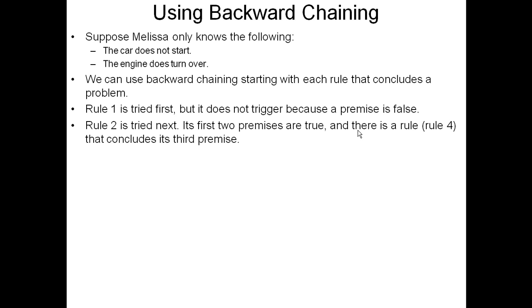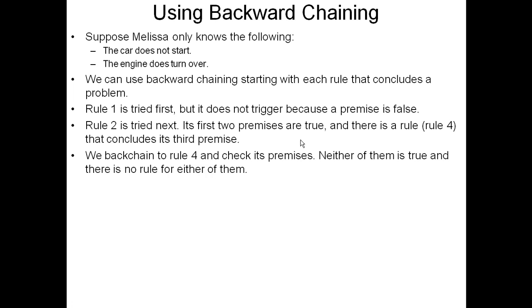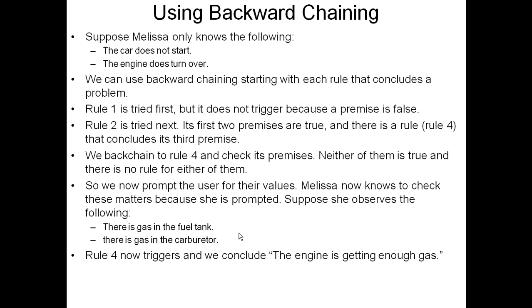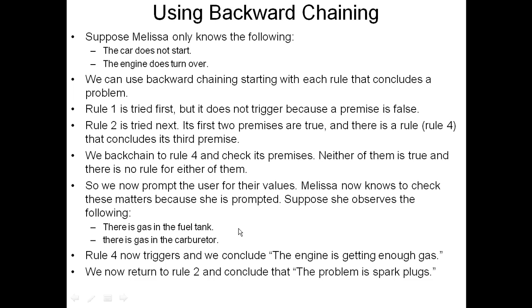Rule two is tried next. Its first two premises are found to be true. Its third one — the engine is getting enough gas — has rule four that concludes it. So backward chaining goes to rule four and checks its premises. Neither of them is known to be true and there's no rule for either of them, so we prompt the user for their values. We ask Melissa: is there gas in the fuel tank? And she checks. Is there gas in the carburetor? And she checks. Suppose she finds there is gas in the fuel tank and there is gas in the carburetor. Rule four now triggers because its two premises are true, and we conclude the engine is getting enough gas.